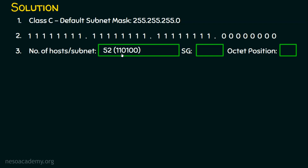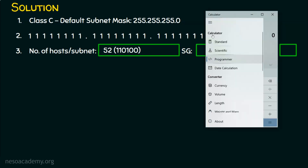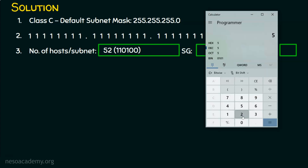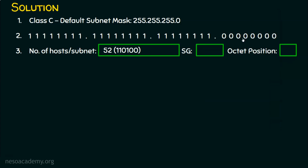Let's verify that using a calculator — I'm choosing the programmer calculator and typing 52. The decimal number 52 in binary is 00110100. As mentioned in the previous lecture, we omit the leading zeros, so we get 110100. That's the binary equivalent for the number 52.